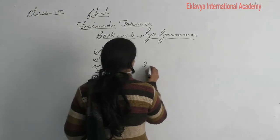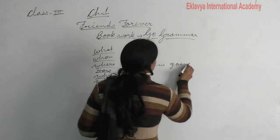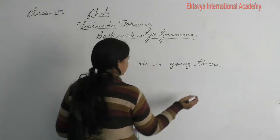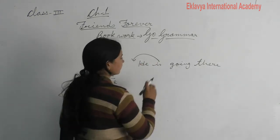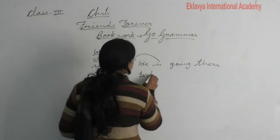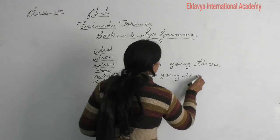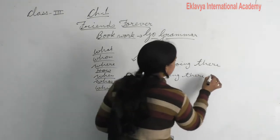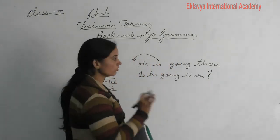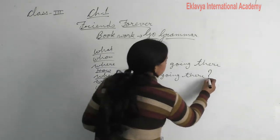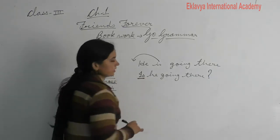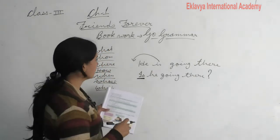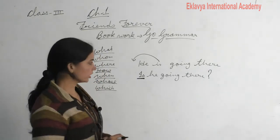For example: 'He is going there.' How do we make it interrogative? You have to write the helping verb before the subject: 'Is he going there?' Students, remember that when we form an interrogative sentence, at the end of the sentence we have to put a question mark. Don't forget — you have to put a question mark. Also, the first letter of any sentence should be capital.